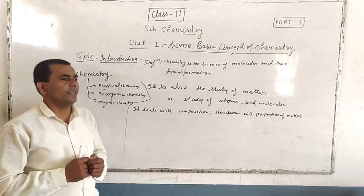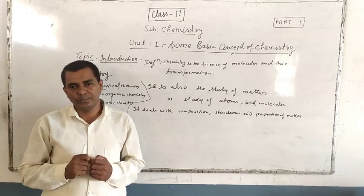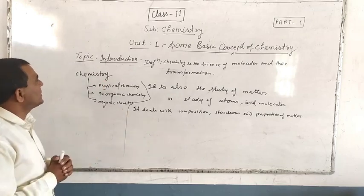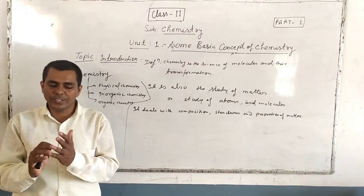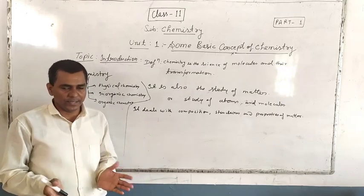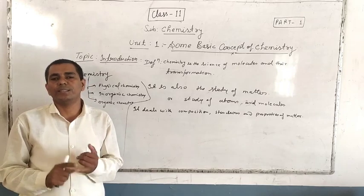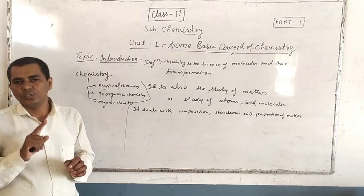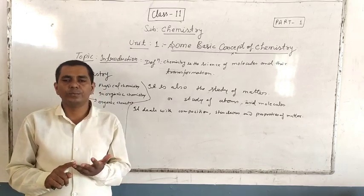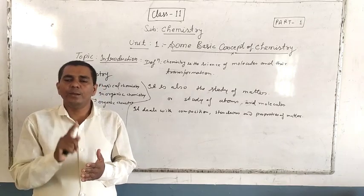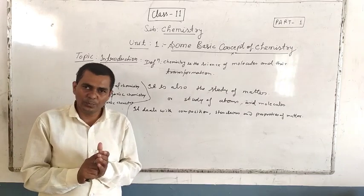Now these are the divisions of chemistry. In class 10, we studied science with physics, chemistry, and biology together. But in class 11, they are separated into individual subjects. In class 11, there are two types of science groups: math group and bio group, and also commerce group. In the math group, physics, chemistry, and math are studied. In the bio group, physics, chemistry, and biology are studied.